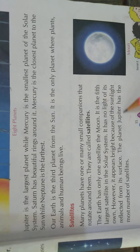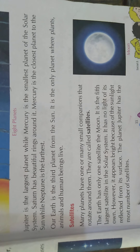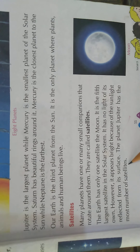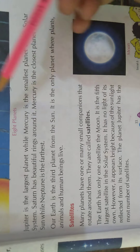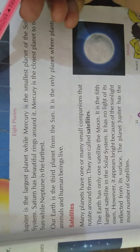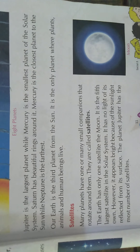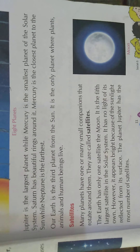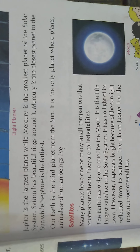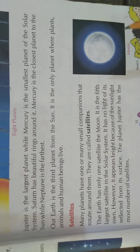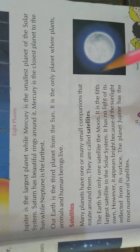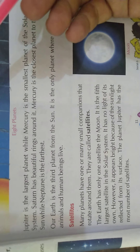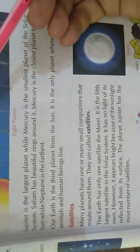The planet Jupiter has the most number of satellites. Jupiter is also the largest planet of the solar system, so being the largest planet, it naturally has the most number of satellites.